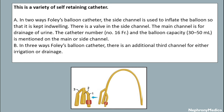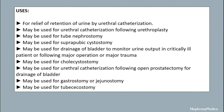The catheter number — number 16 — and the balloon capacity of 30 to 50 milliliters is mentioned on the main or side channel. In a three-way Foley balloon catheter, there is an additional third channel for either irrigation or drainage.